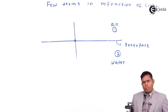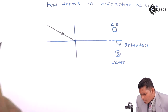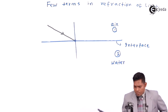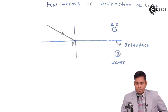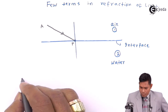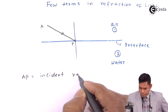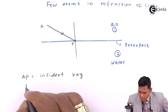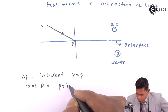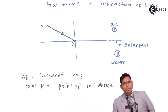The point where the ray strikes the surface is called the point of incidence. Suppose this point is called P; the ray AP is called the incident ray. Point P is called the point of incidence because it is the point where the ray strikes the surface.